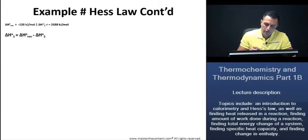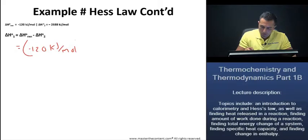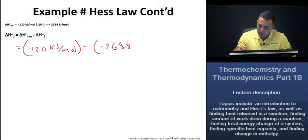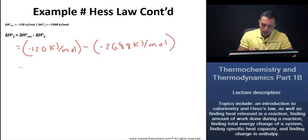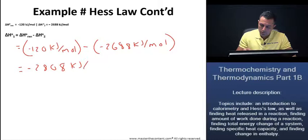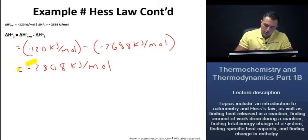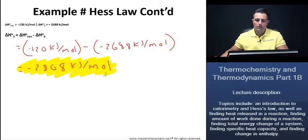Great. If we take a look here, this here is the equation that we had left off with. Let's go ahead and pick it up from here. If we go ahead and we just write in our values, we know this is going to be negative 120 kilojoules per mole, minus negative 2,688 kilojoules per mole as such. And once we go ahead and we equate that, we see that we get a value of negative 2,808 kilojoules per mole. And that there is our answer. Great. Let's now move on.